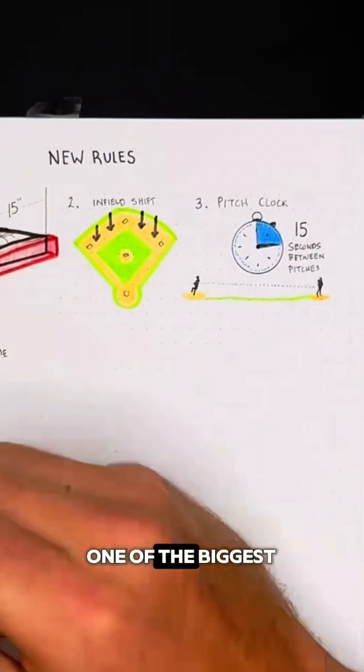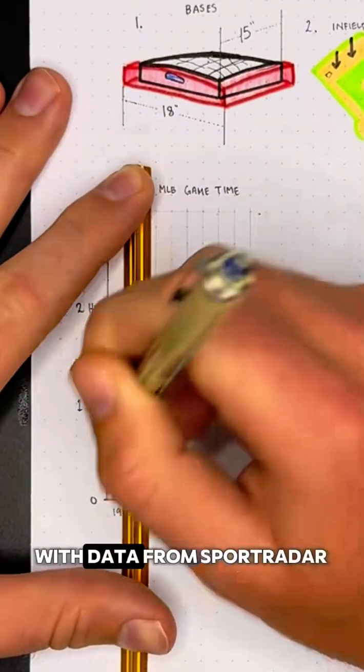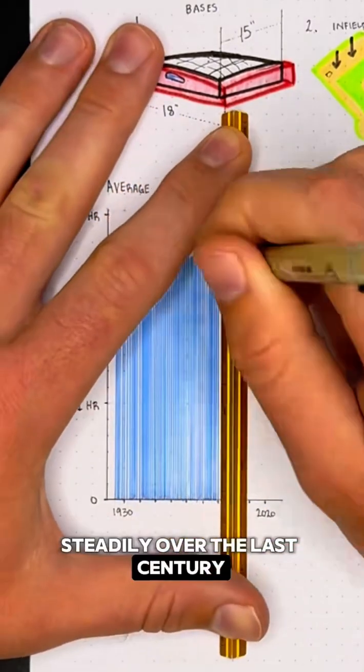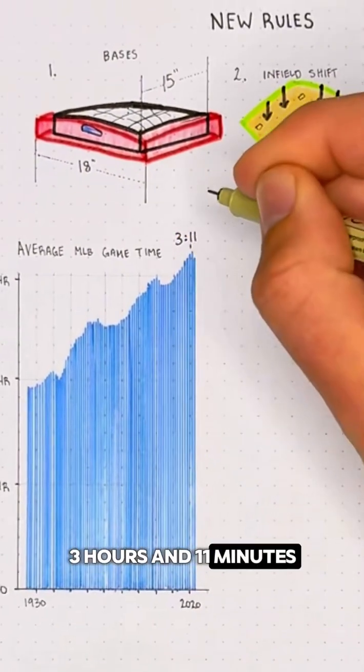You see, for years, one of the biggest complaints in the sport was that baseball was just too slow, and the numbers proved it. With data from SportRadar, this chart shows that game times have climbed steadily over the last century, rising 21% in just the past 40 years to an average of 3 hours and 11 minutes.